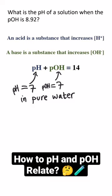Adding the pH and pOH for a solution will always equal 14, so if one of them goes up, the other goes down so that they still equal 14.